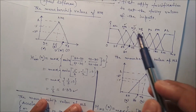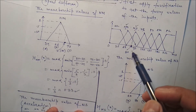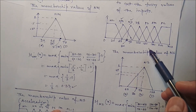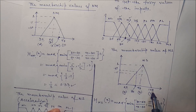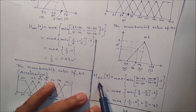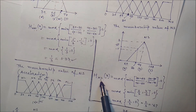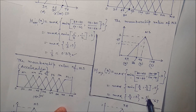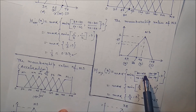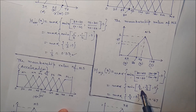For the NS fuzzy set, parameters are a = 60, b = 90, c = 120. Applying the triangular formula: μ_NS(80) = max(min((80−60)/(90−60), (120−80)/(120−90)), 0) = max(min(20/30, 40/30), 0) = max(min(2/3, 4/3), 0) = 2/3 ≈ 0.67. So for speed difference = 80: μ_NM = 0.33, μ_NS = 0.67, all others = 0.